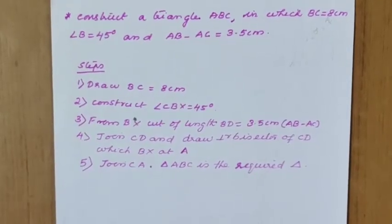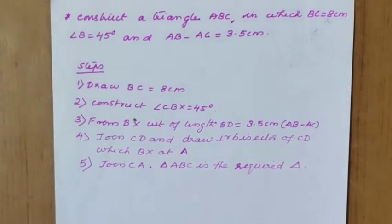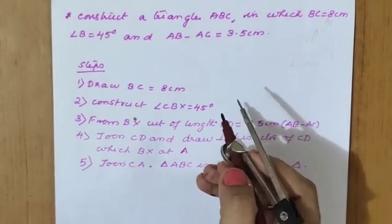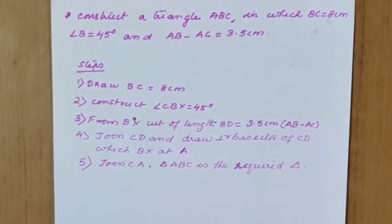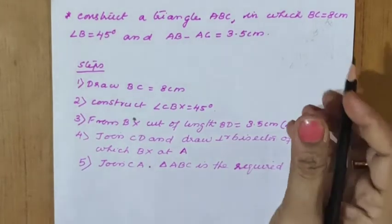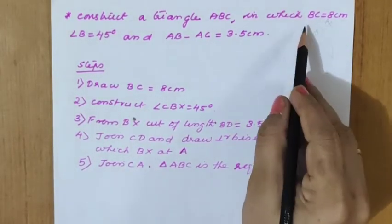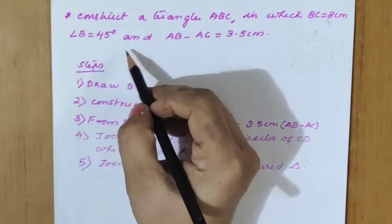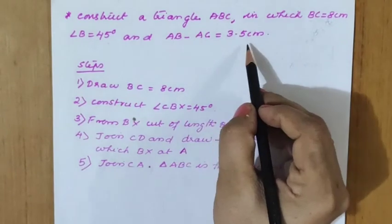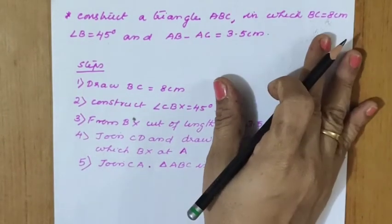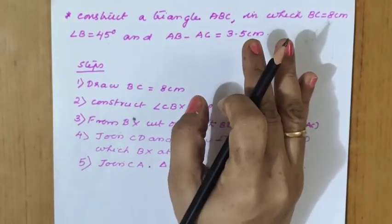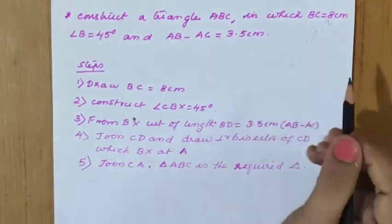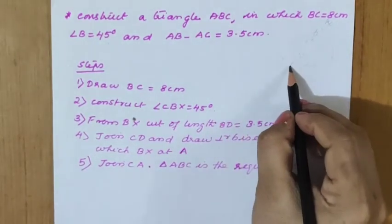Good morning children. Chapter 11 Constructions. We already done the new concept with the sum of the two sides. Today we are going to do when the difference of the two sides are given. The question: construct a triangle ABC in which BC equals 8 centimeter, that is base, and angle B equals 45 degree, and AB minus AC equals 3.5 centimeter.